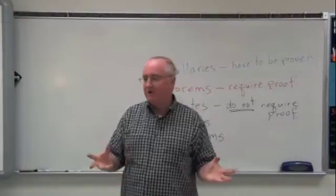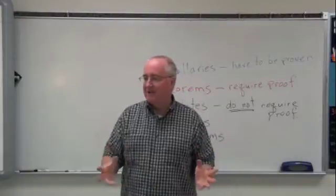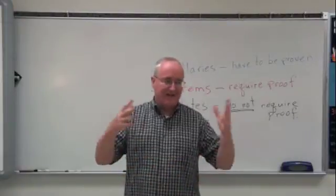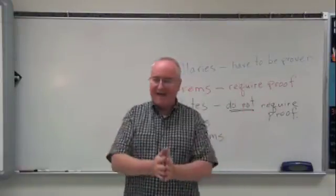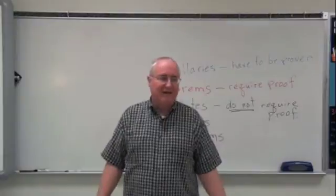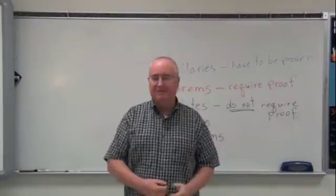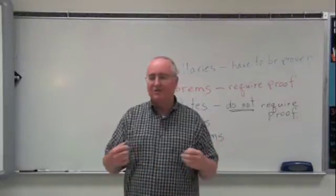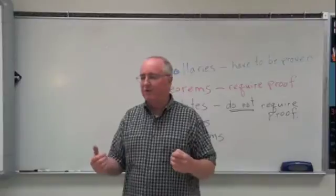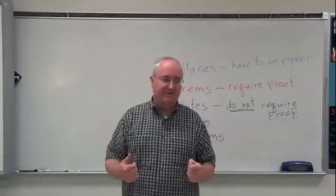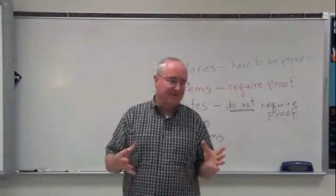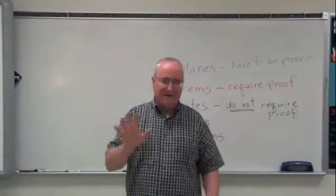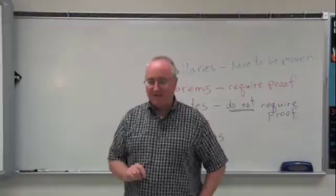He wrote a book called Euclid's Elements, and in it he described all kinds of math rules, axioms, assumptions, and postulates. In those he also described what we consider to be the definition of Euclidean geometry: five postulates.